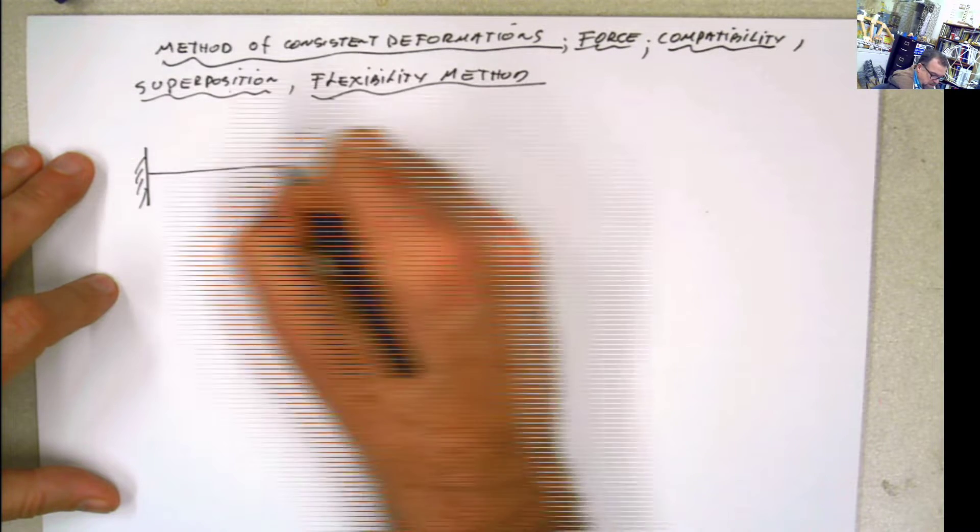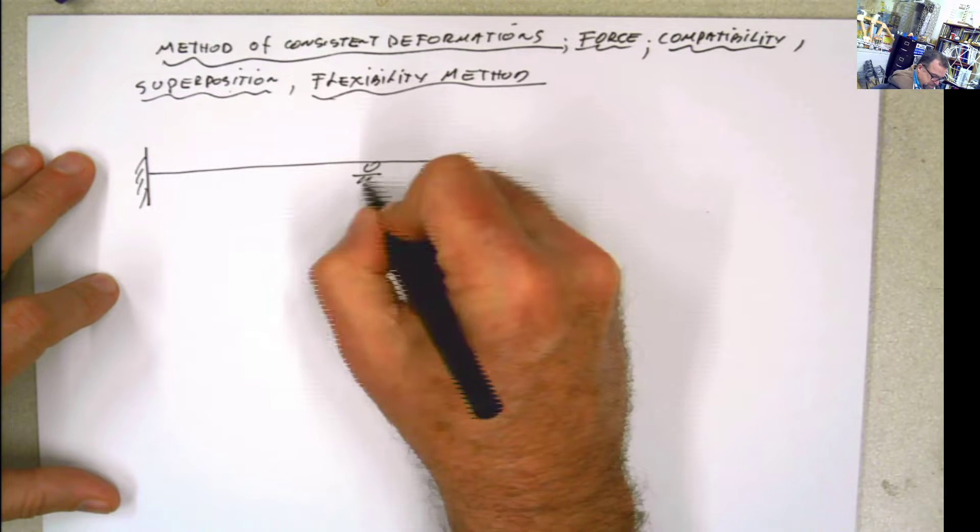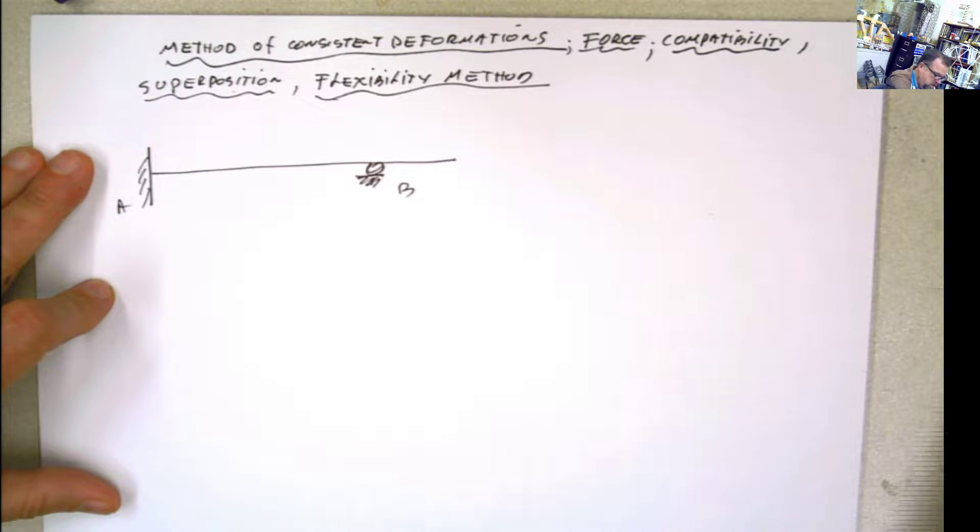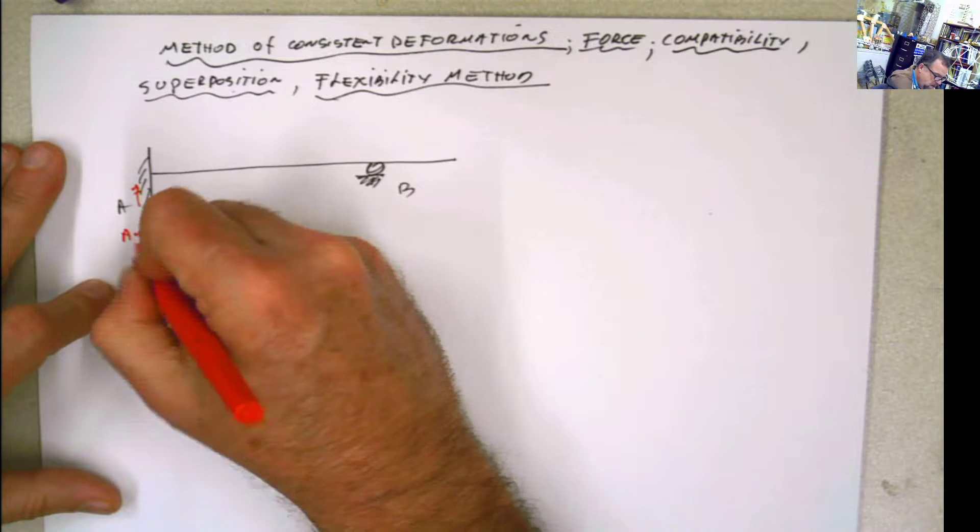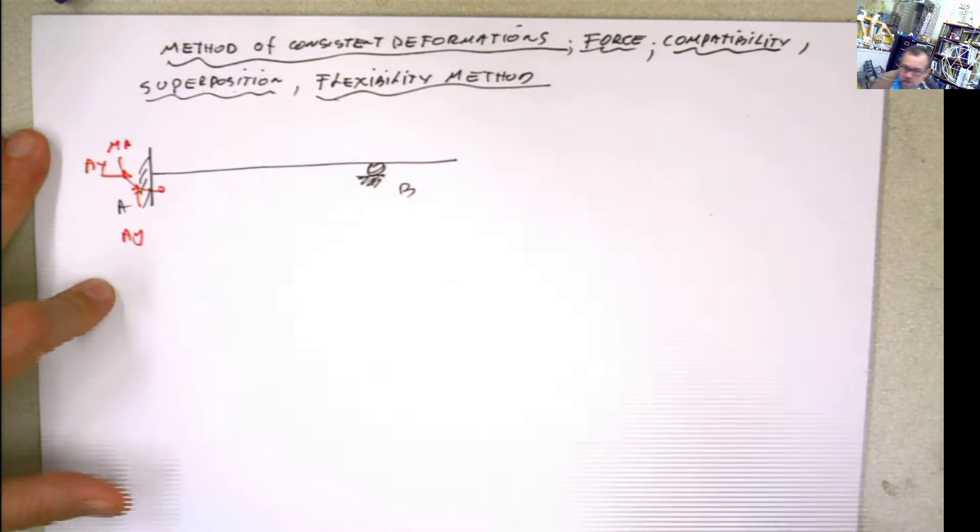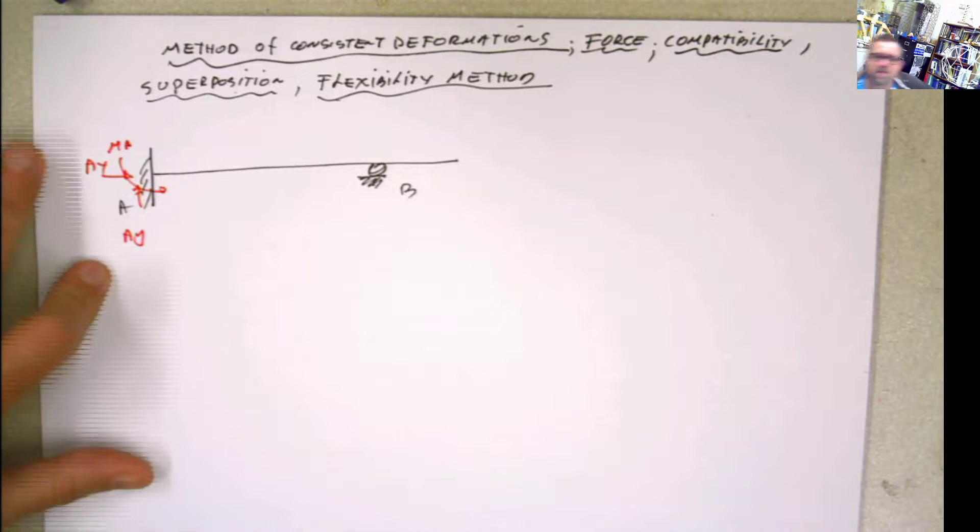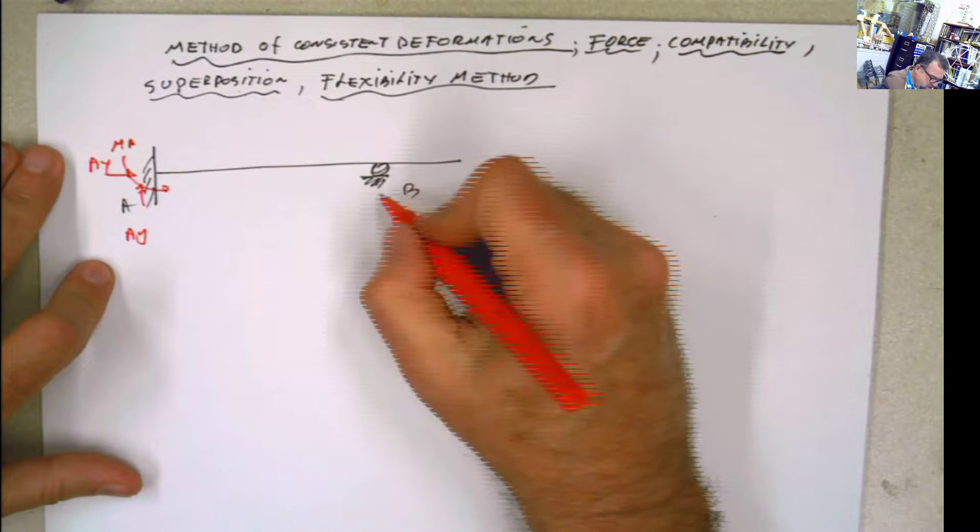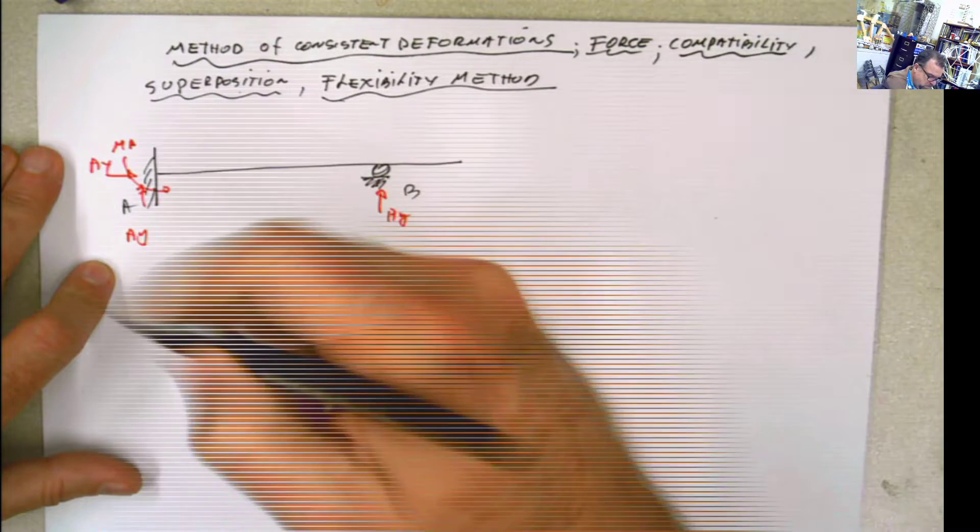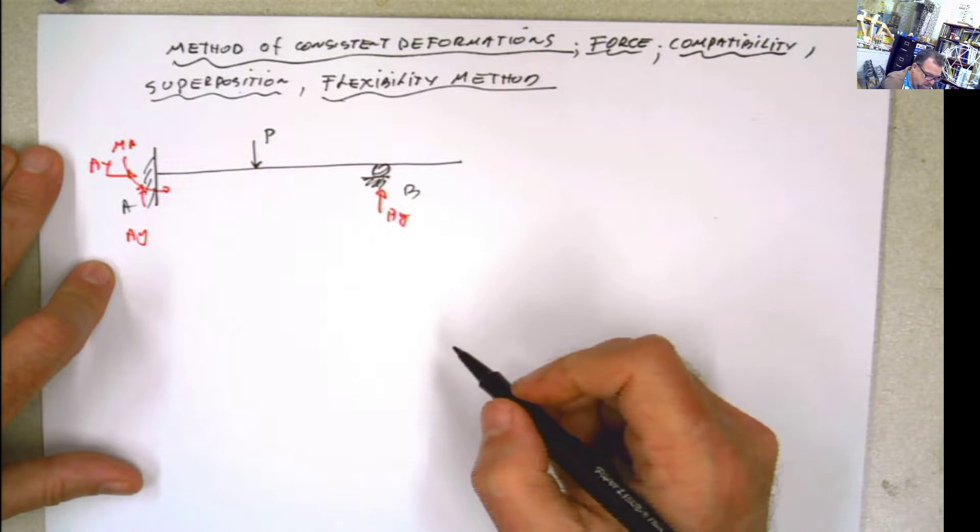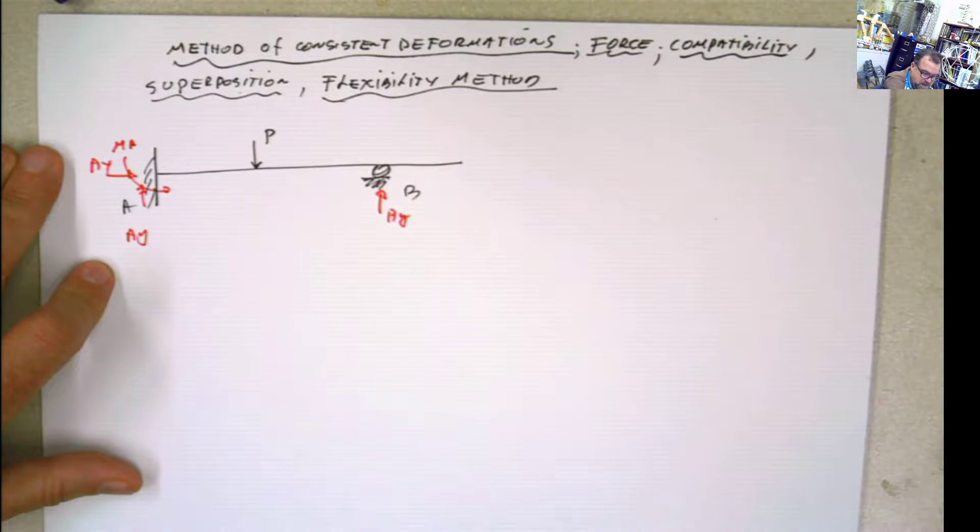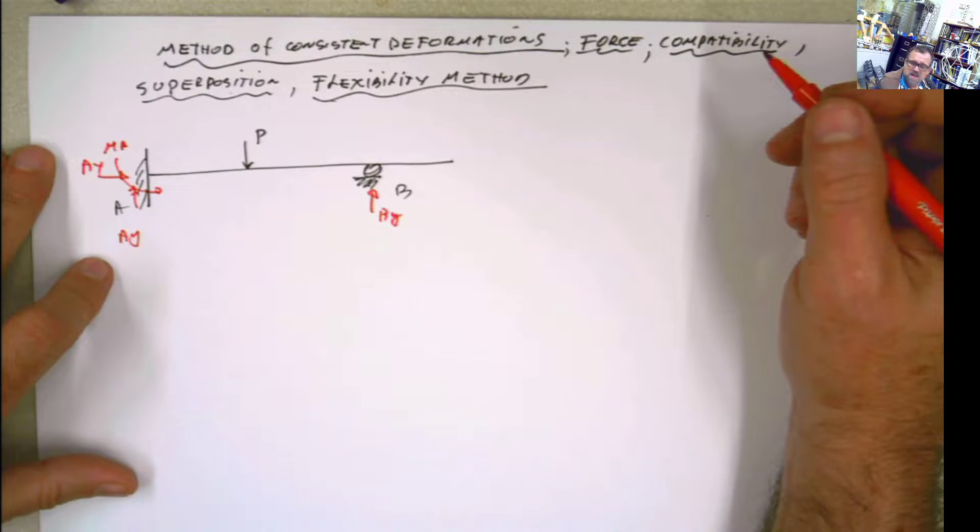Let's say that you have a structure, a beam, simple beam like this. And this is A and this is B. And then you have the reactions here. This is a fixed support, so you have Ay, Ax, Ma. Let me see if I'm recording, because if I'm not recording, yes I am recording, cool. And this is going to be By. And I apply a force, the force is applied there, force P, different than zero of course. Now the first step towards solving this is checking if it's statically determinate or statically indeterminate.